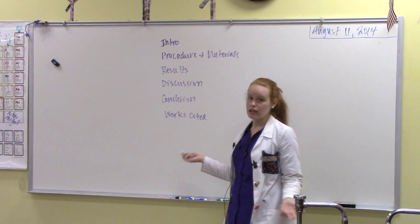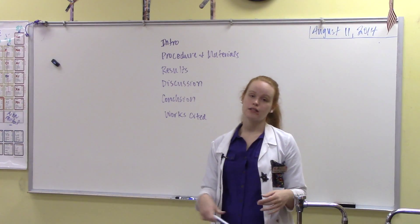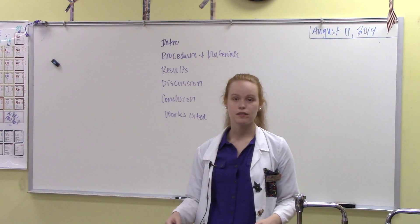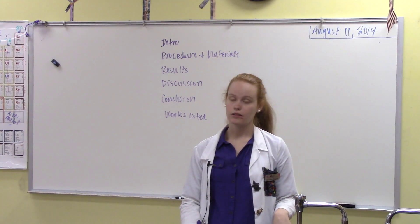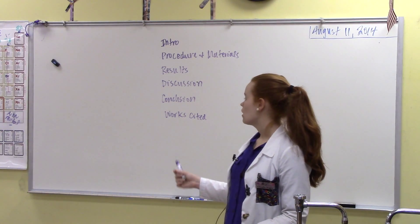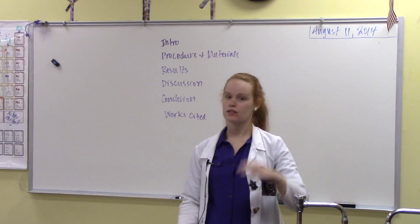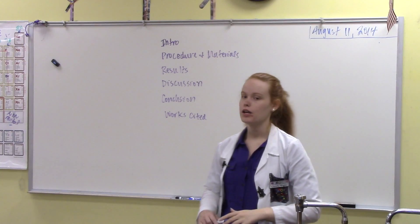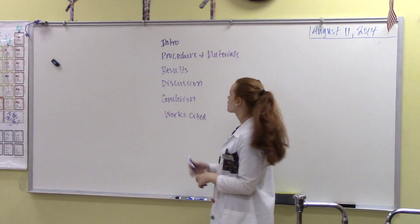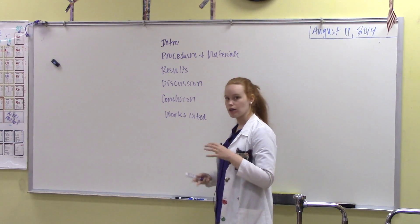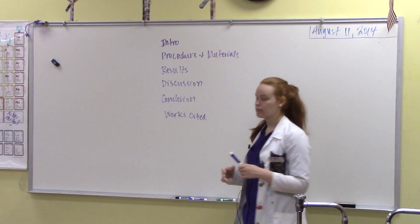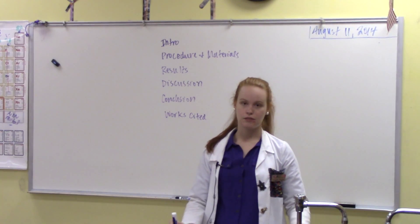Some other key things about a lab report that you need to know: it should always be in third person. There are no I's, no we's, no you's — this is he, she, it, or they. You're writing in third person. You also need to make sure that you are breaking these sections apart — it's not just like an English paper where everything flows together. You're going to have one section titled 'Introduction,' then a paragraph or two, then another section titled 'Procedure and Materials,' and so on. It's not just a paper where you have five paragraphs flowing together — these are broken up into different sections.